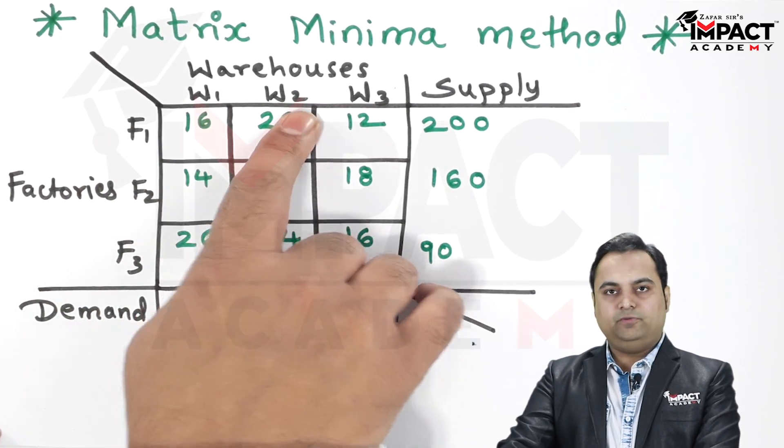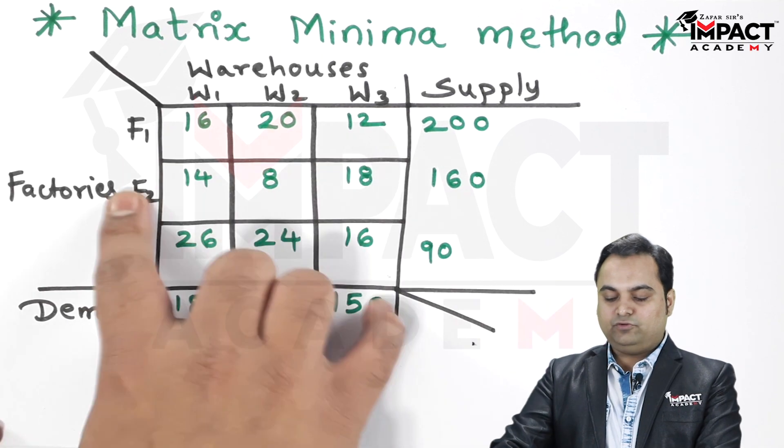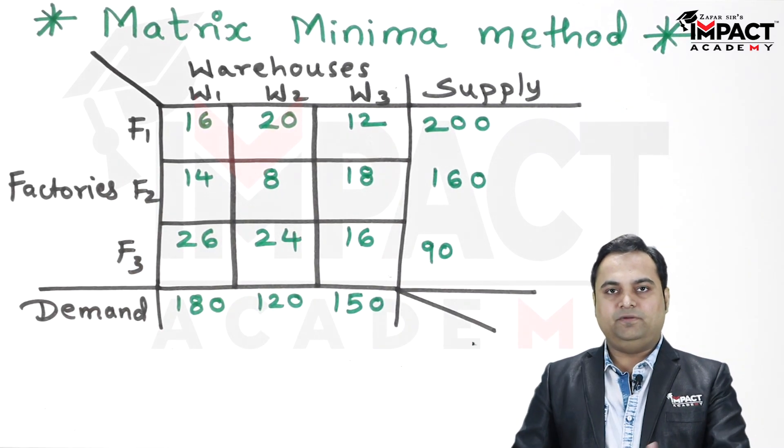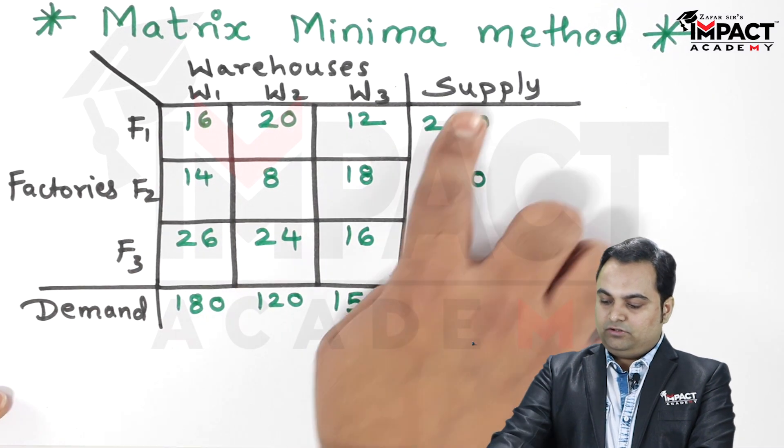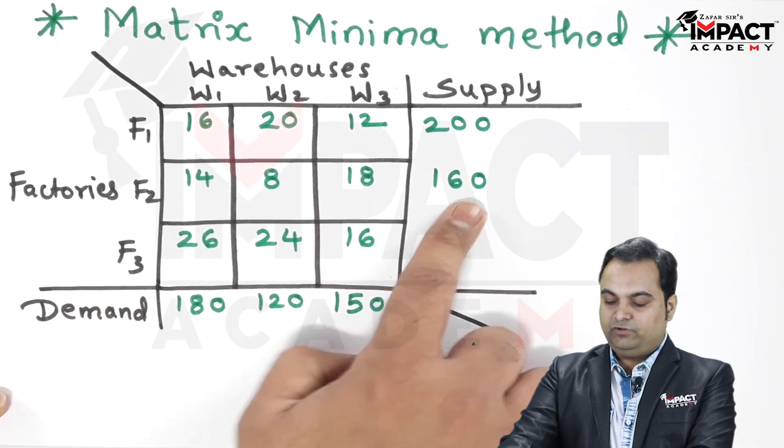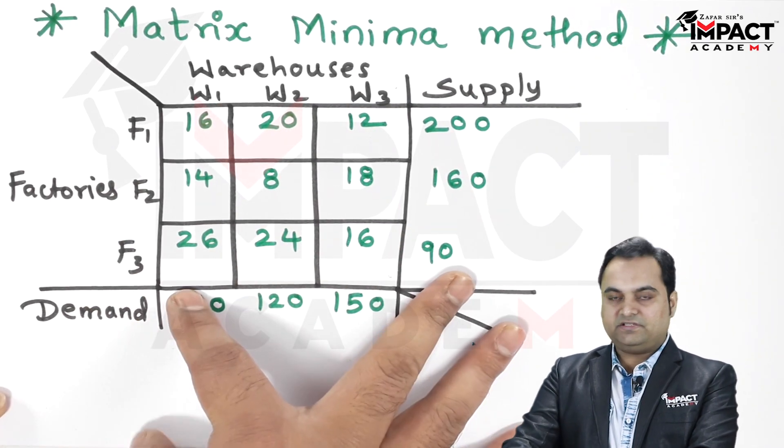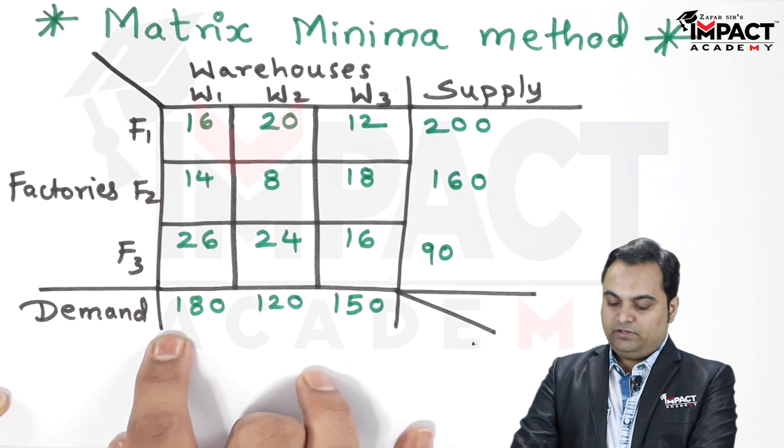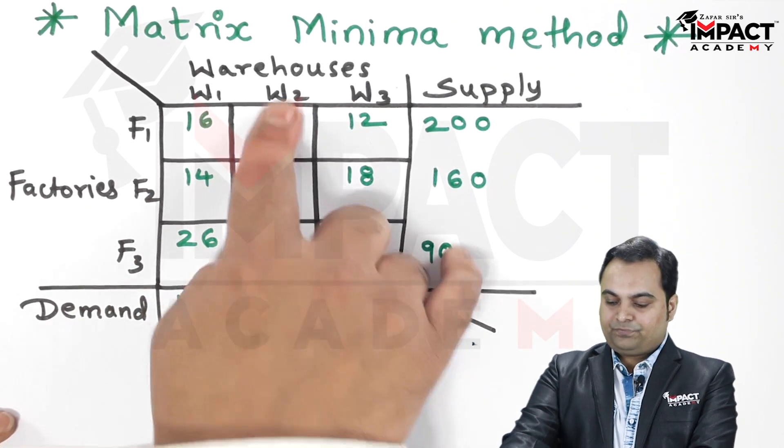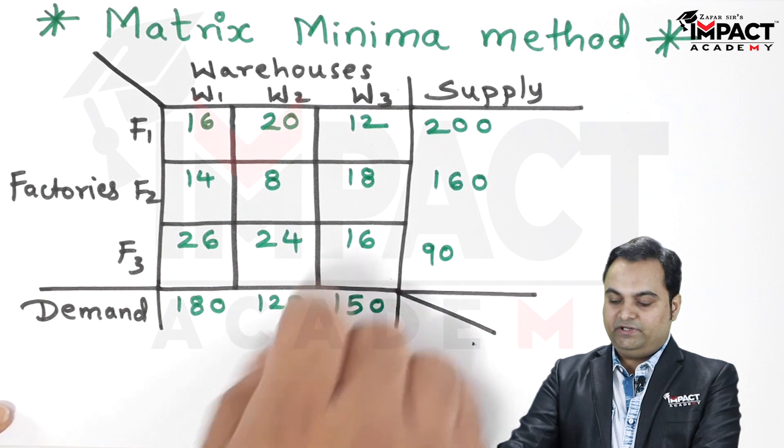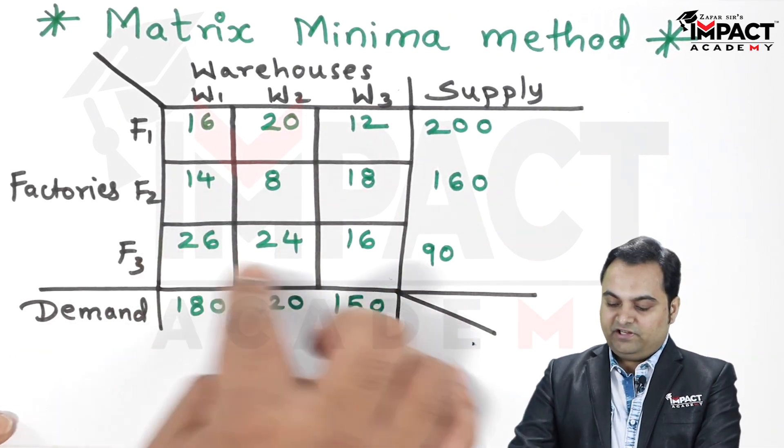Three warehouses W1, W2, and W3 where we have to supply the material from one place to another. The total supply for factory F1 is 200, for F2 it is 160, F3 it is 90. Warehouse one has a demand of 180, for warehouse two it is 120, and for three it is 150.